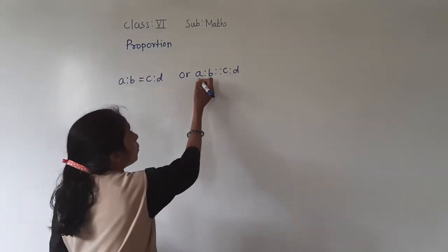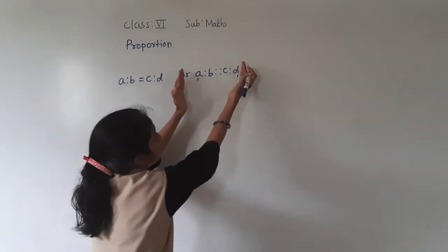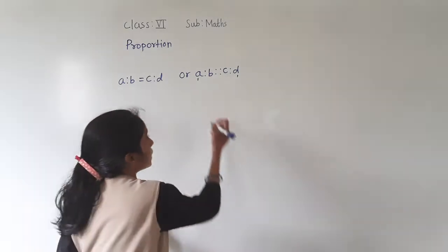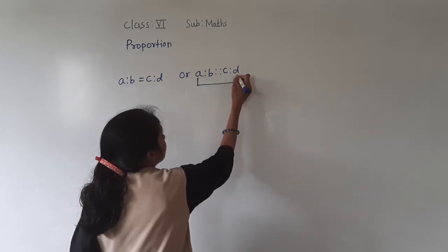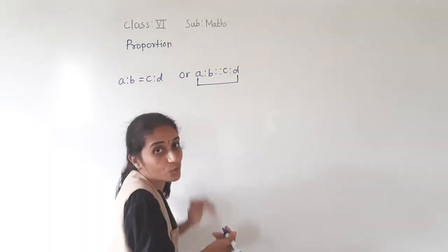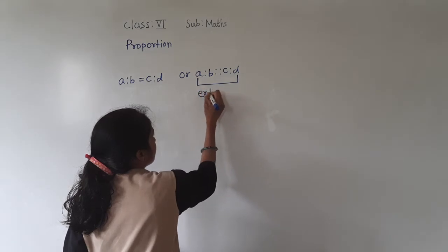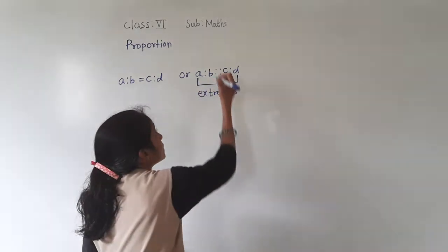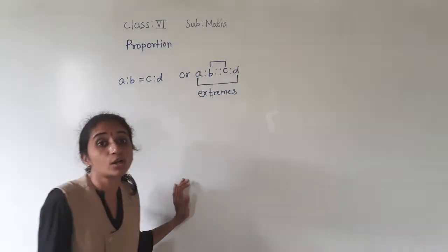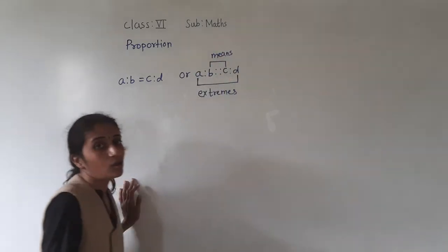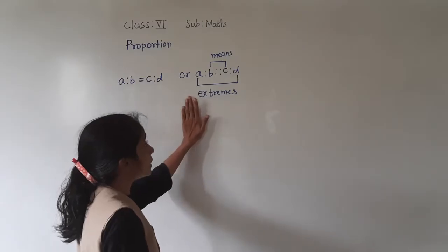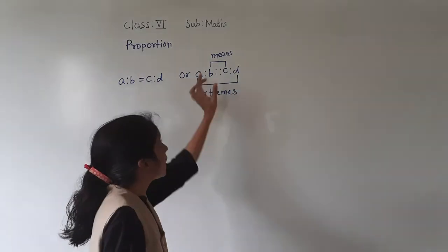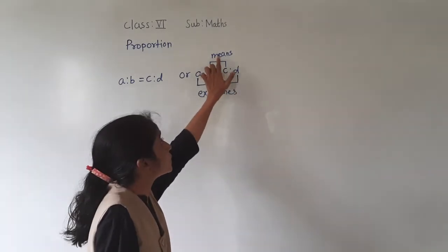Now in this, which are the outer terms? These both terms are outside. For the outer terms, what we call them are the extremes. So A and D are the outer terms — we call them extremes. And B and C are the inner terms — what we call the means.